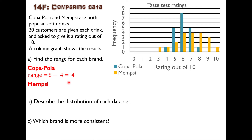For Mempsi, the range is the largest rating minus the smallest. One person gave a 10 and one person gave a three. So the range is 10 take three, which is seven. The range for Mempsi is bigger than the range for Copapola, which tells us that people have very different opinions about Mempsi — there's more variety in how people rate it — whereas Copapola is more consistent.